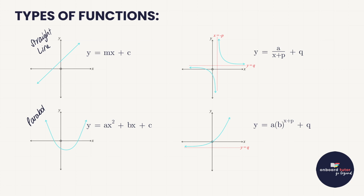Last year we looked at how to move the parabola up and down, and this year we're also going to move it side to side. The straight line has a standard formula of y = mx + c, and the parabola's formula is y = ax² + bx + c. We'll look at different ways to write that in the parabola video, but for now, the moment you see a square, this is also known as a quadratic function — which makes sense because it's a quadratic equation.